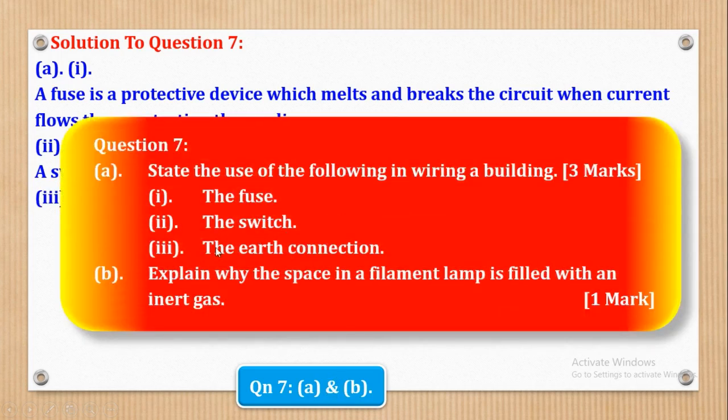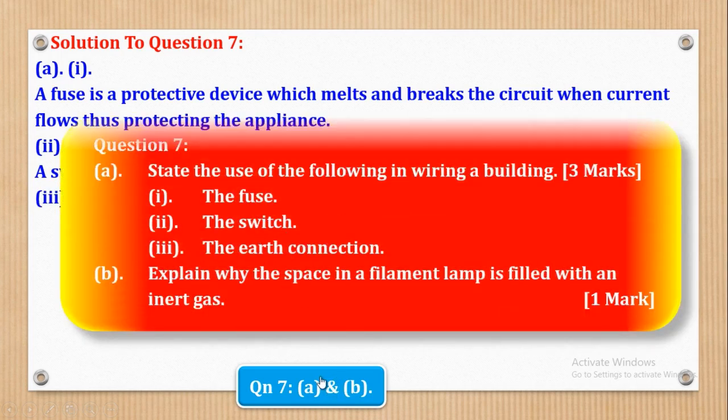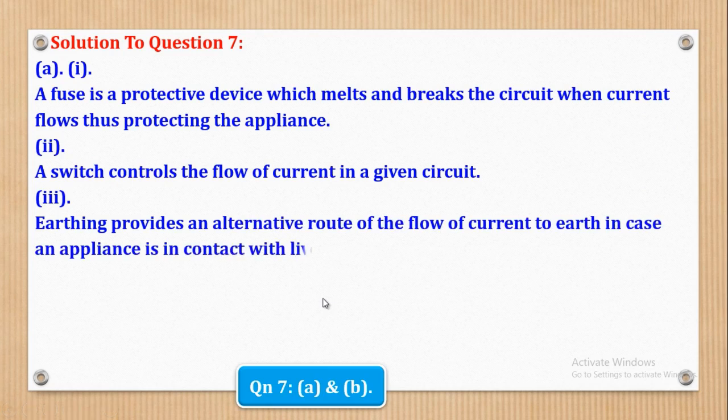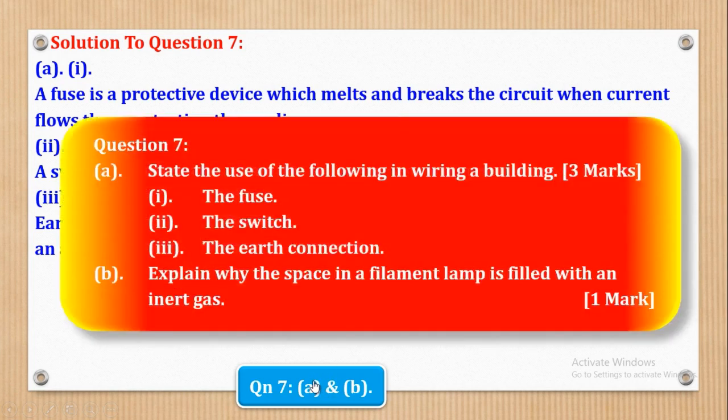Now we shall go to Roman 3. Roman 3, they wanted the function of earth connection. So earthing provides an alternative route of the flow of current to earth in case an appliance is in contact with live wire. So basically, that's what they wanted in Part A.